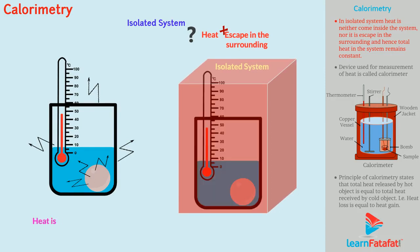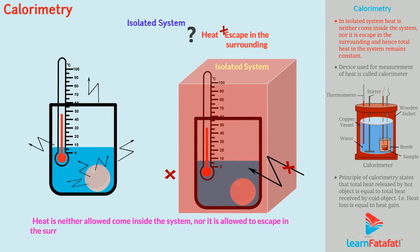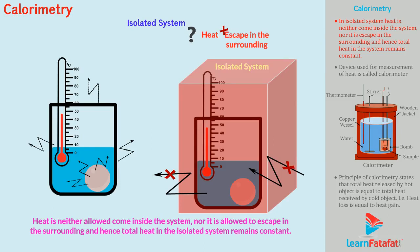In an isolated system, heat is neither allowed to come inside the system, nor is it allowed to escape into the surrounding. And hence, total heat in the isolated system remains constant. Now, we will explore this concept to explain calorimetry.